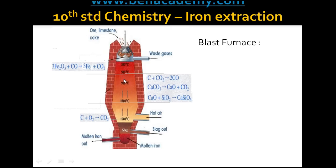Two more reactions also take place in the middle zone. First, limestone containing calcium carbonate decomposes into lime and carbon dioxide. This lime reacts with the silica present in the hematite ore as an impurity to form calcium silicate. So in the middle zone, calcium silicate is formed. Also in the middle zone, carbon dioxide is converted into carbon monoxide.